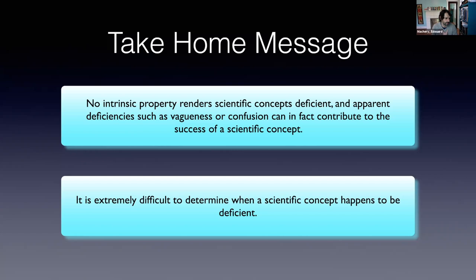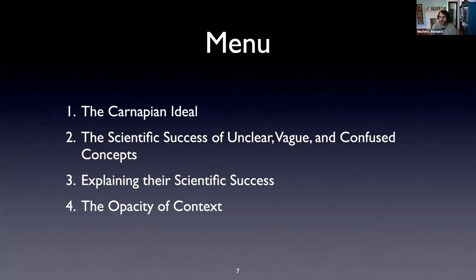Here's the structure of the talk. I will first describe what I call the Carnapian ideal — it's a reconstruction, a convenient foil. Against this ideal, I will describe the scientific success of unclear, vague, and confused concepts, relying on works done by historians and philosophers of science, mostly historians and philosophers of biology.